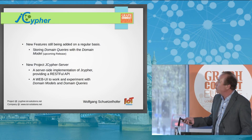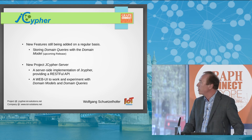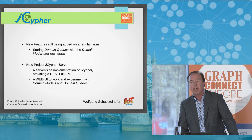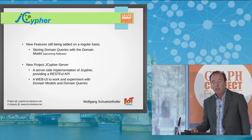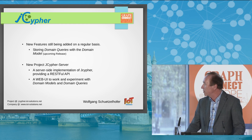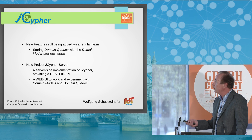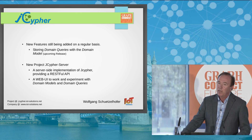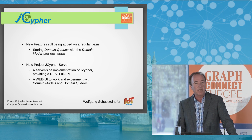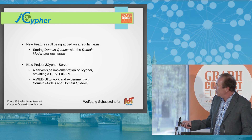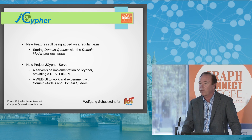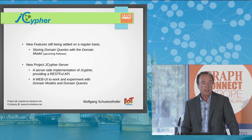New features are still being added on a regular basis to J-Cypher. One of the next releases will see a feature where you will be able to store domain queries together with the domain model for later use, so you can reuse a domain query even without access to the Java code that originally created it. I've also recently added a new project, J-Cypher Server — a server-side implementation providing a RESTful API and a web UI to work and experiment with domain models and domain queries. This project is in a really early state, far from feature complete, but it will grow in functionality over the next few months.